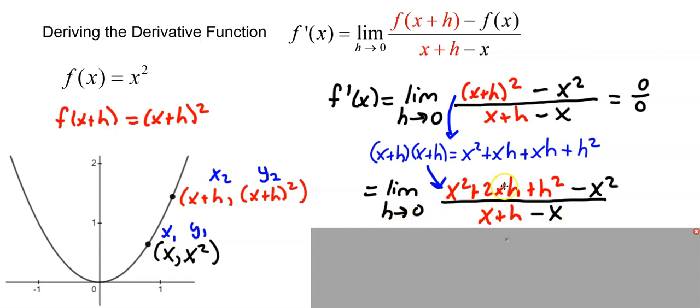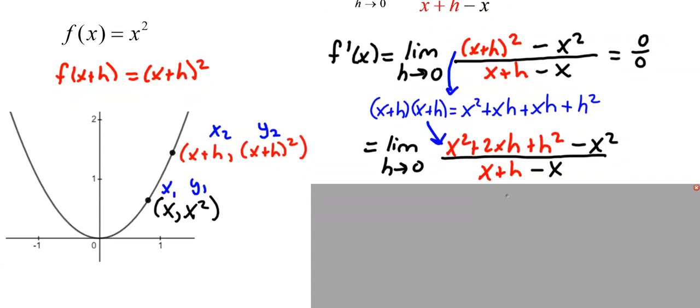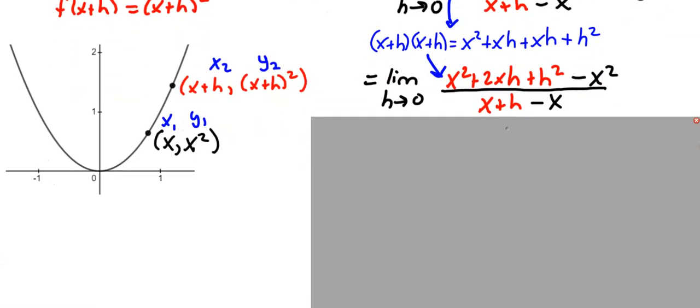If we put zero in for h here, and here, and here, we still have x squared minus x squared over x minus x. So we're not done yet. We need to do a little more algebra to simplify and remove the discontinuity.